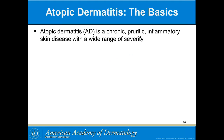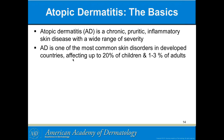Atopic dermatitis is a chronic pruritic inflammatory skin disease with a wide range of severity. It's one of the most common skin disorders in developed countries — up to 20% of children. It used to be about 5% but is now up to about 20%, related to the way we over-protect children and don't expose them to allergens, so their immune system doesn't develop normally. They develop hypersensitivity reactions. Kids really should get exposed to bacteria and various other things early on for their immune system to develop normally.